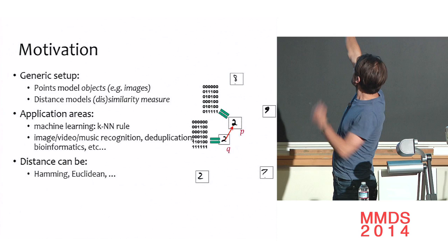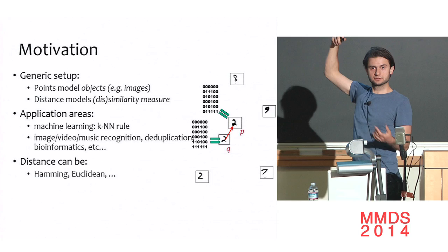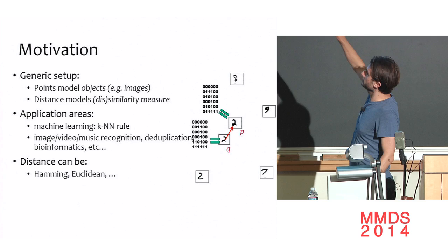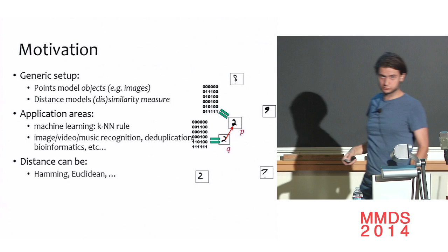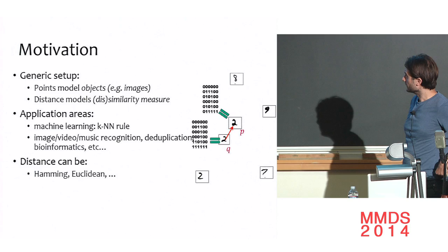The problem is slightly under-specified: what is the space, what are the objects, what is the distance? There are many options, but let me focus on the most fundamental distances in high-dimensional space: Hamming distance over binary vectors, and Euclidean distance over real-valued vectors in high-dimensional space.